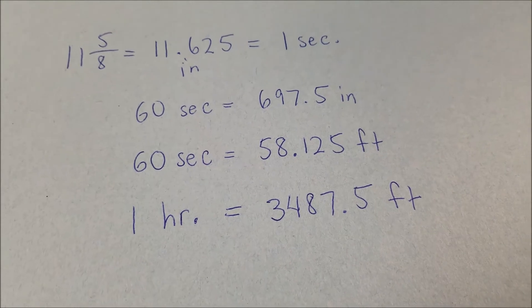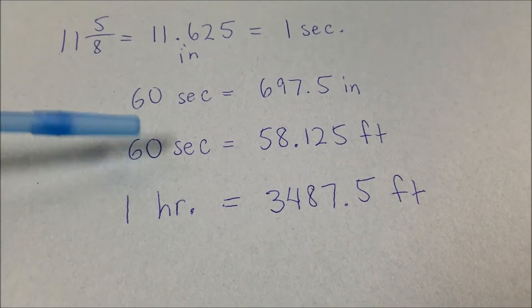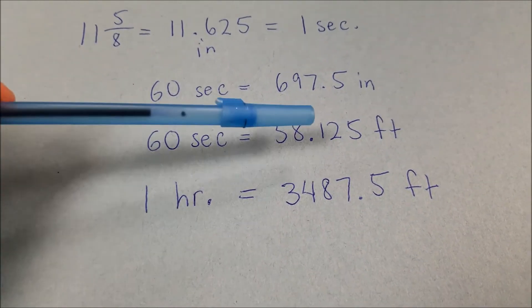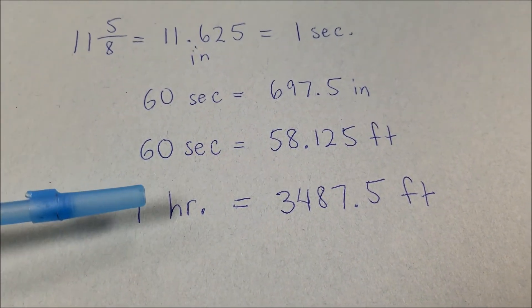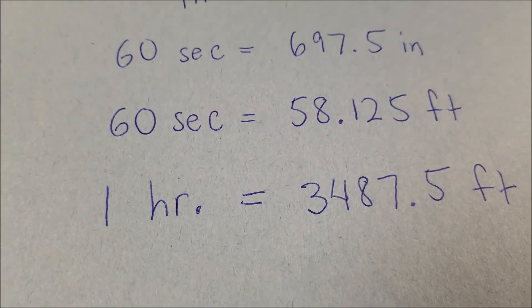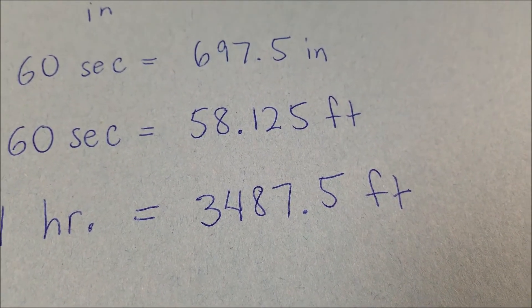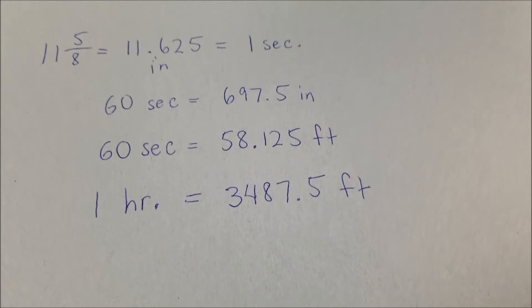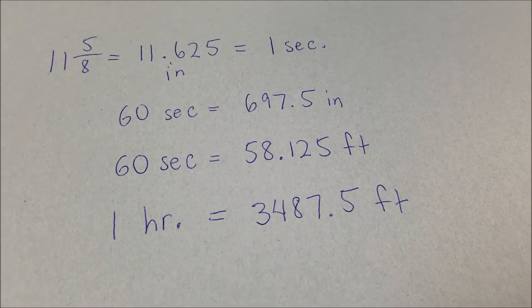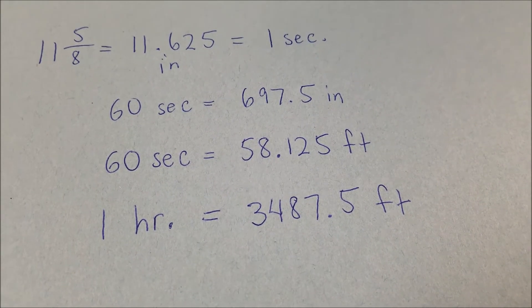Okay, so reviewing or backing up to see what I did, I figured out how far we can go in 60 seconds. I multiplied this number by 60 to figure out how far this robot would go in an hour. So if we ran this robot for an hour, it would go 3,487.5 feet. So we already know that this does not go one mile per hour because a mile is 5,280 feet.